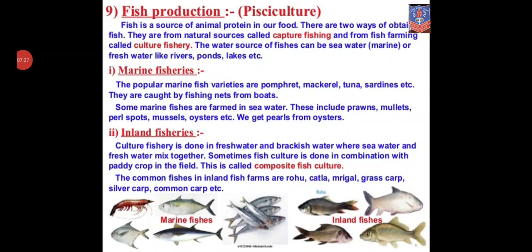Now comes the next topic, that is fish production. Fish production is called pisciculture. Fish is a source of animal protein in our food. There are two ways of obtaining fish: from natural sources, called capture fishing, and from fish farming, called culture fishery. When fish are caught from rivers, seas or oceans, it is called capture fishing, and when we create small water sources for farming fish, that is called culture fishery.